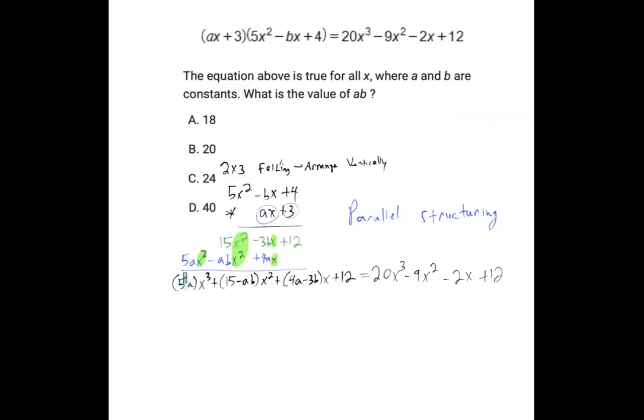It's the idea that in an arrangement like this, 5a needs to equal 20. And 15 minus ab needs to equal negative 9, and so on and so forth. 4a minus 3b will equal negative 2, even though we're never going to need to use that one. And just for a little bit of confirmation, 12 equals 12 right there at the end.